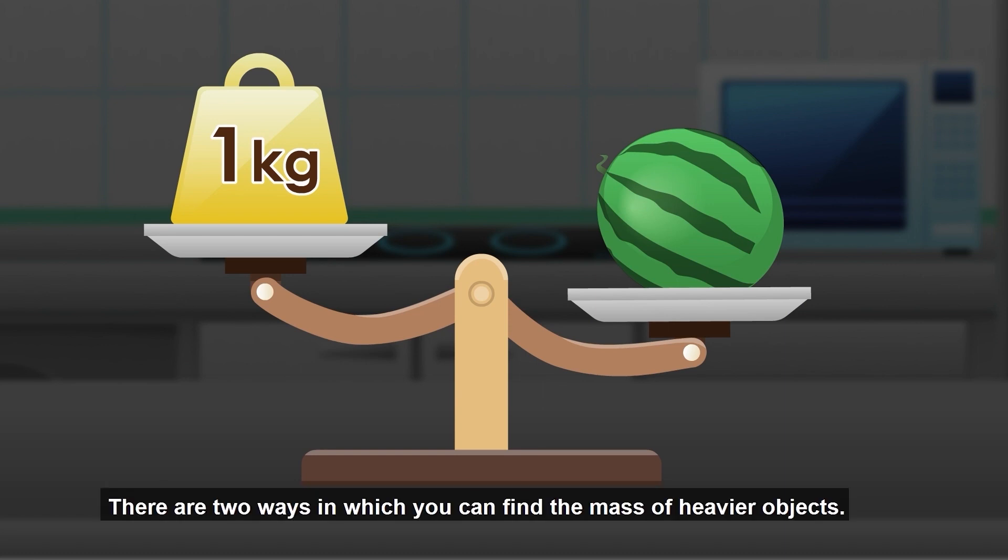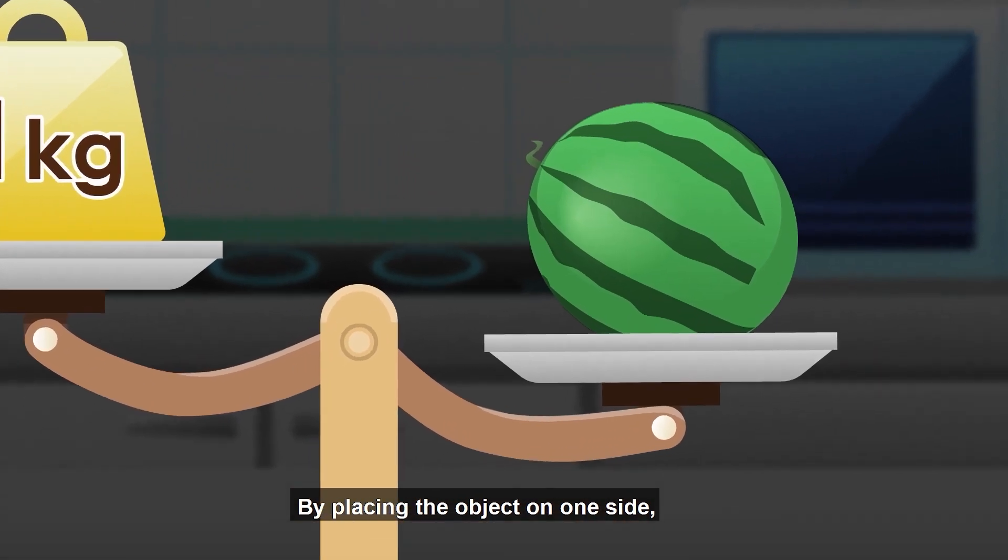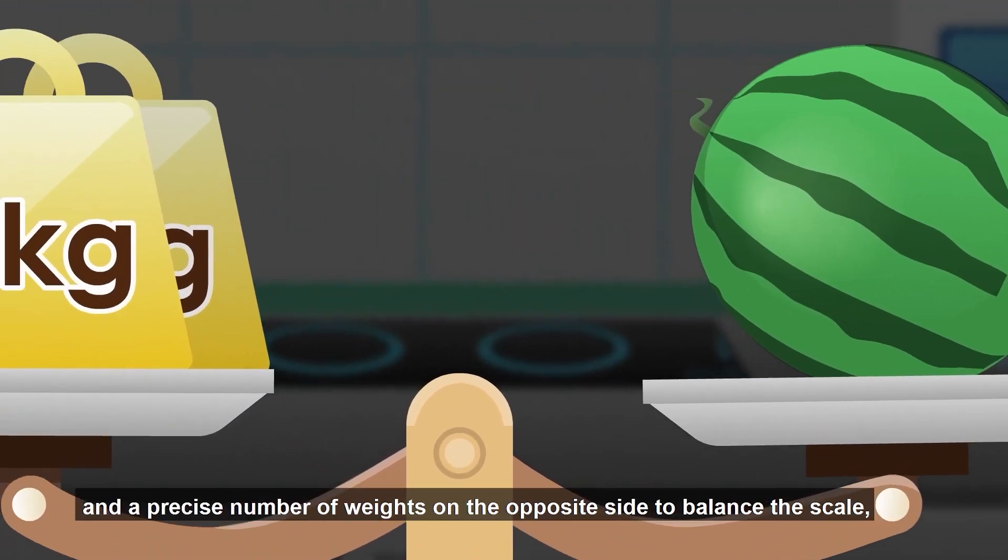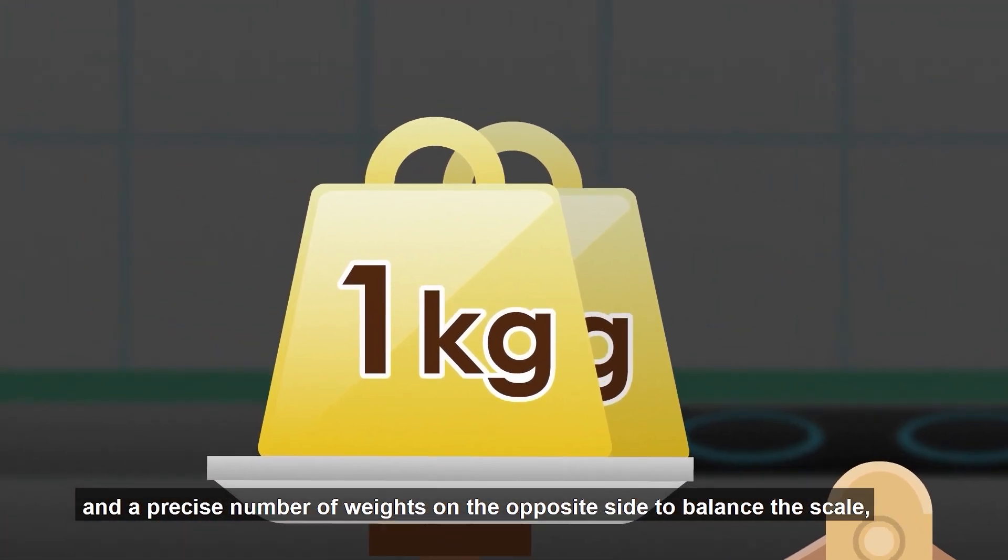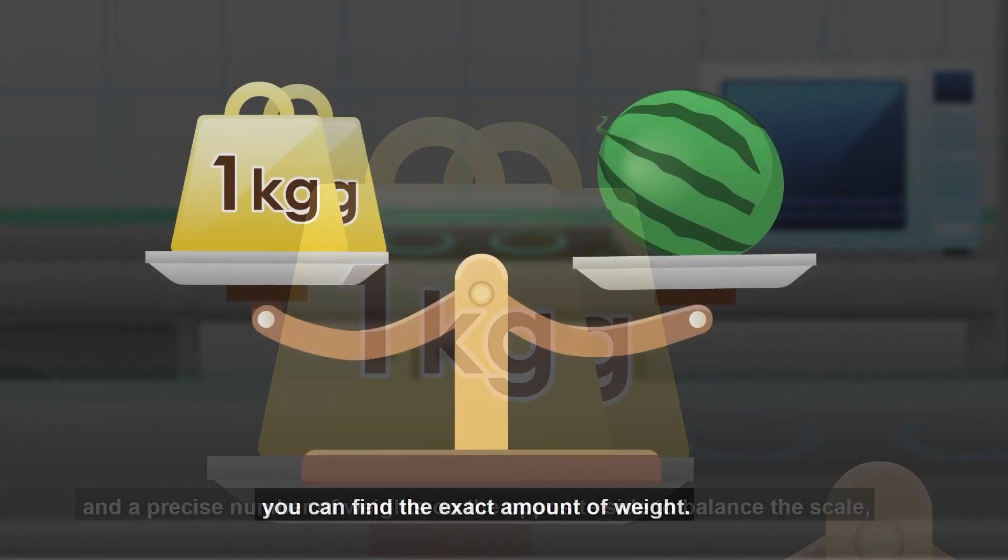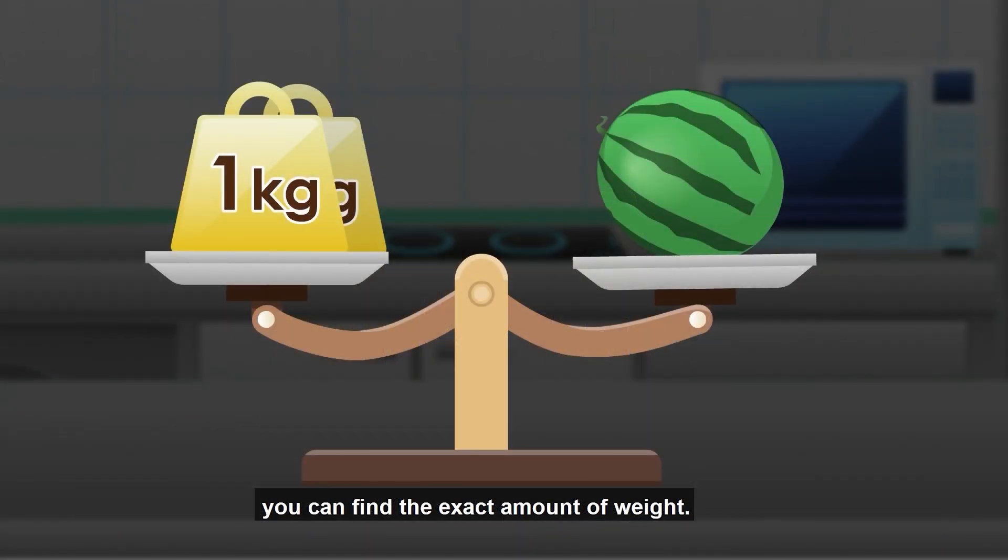There are two ways in which you can find the mass of heavier objects. The first way is to use a balance and weights. By placing the object on one side and a precise number of weights on the opposite side to balance the scale, you can find the exact amount of weight.